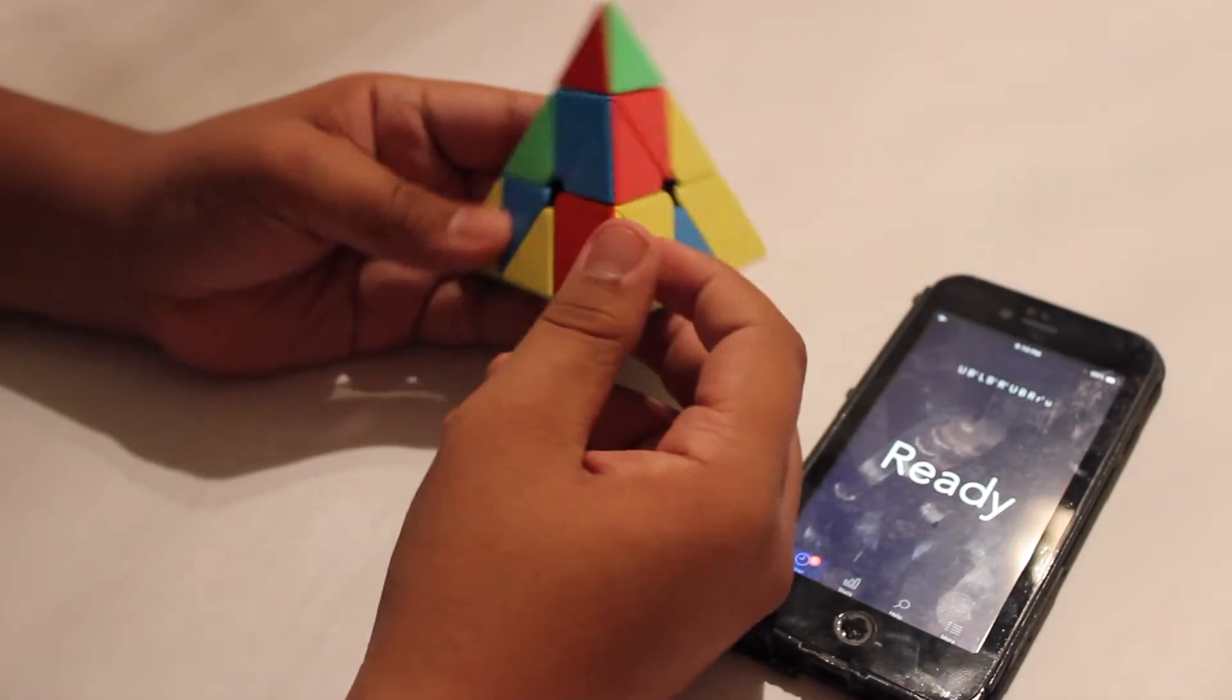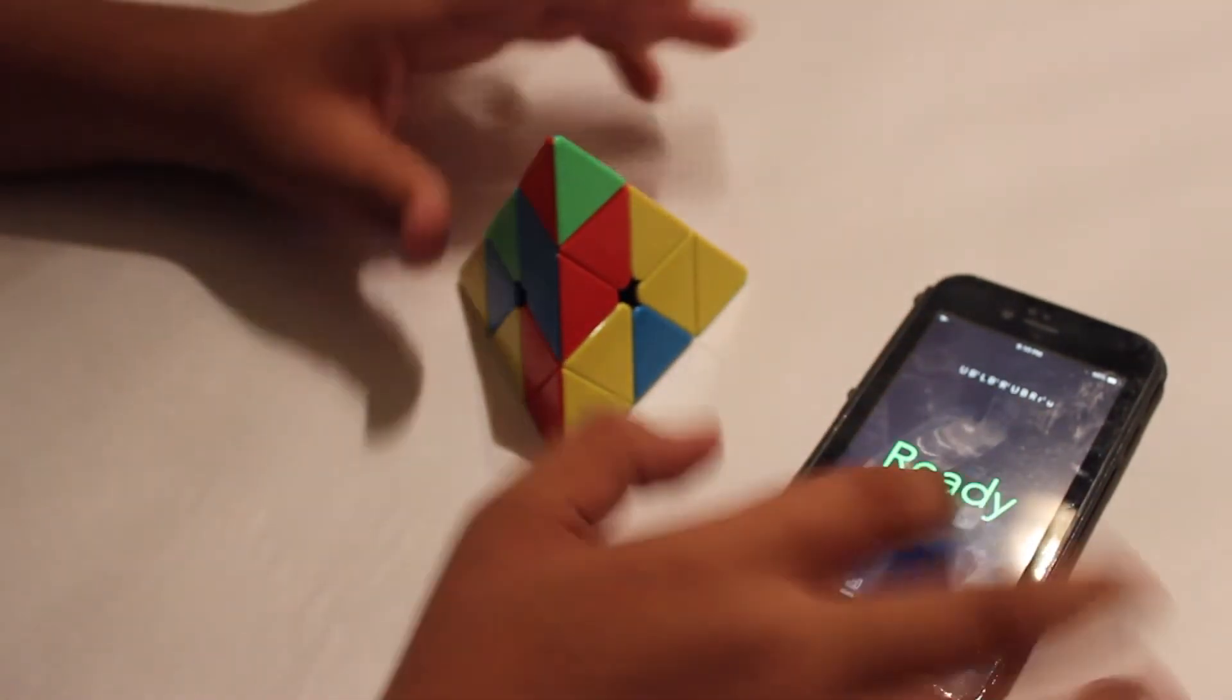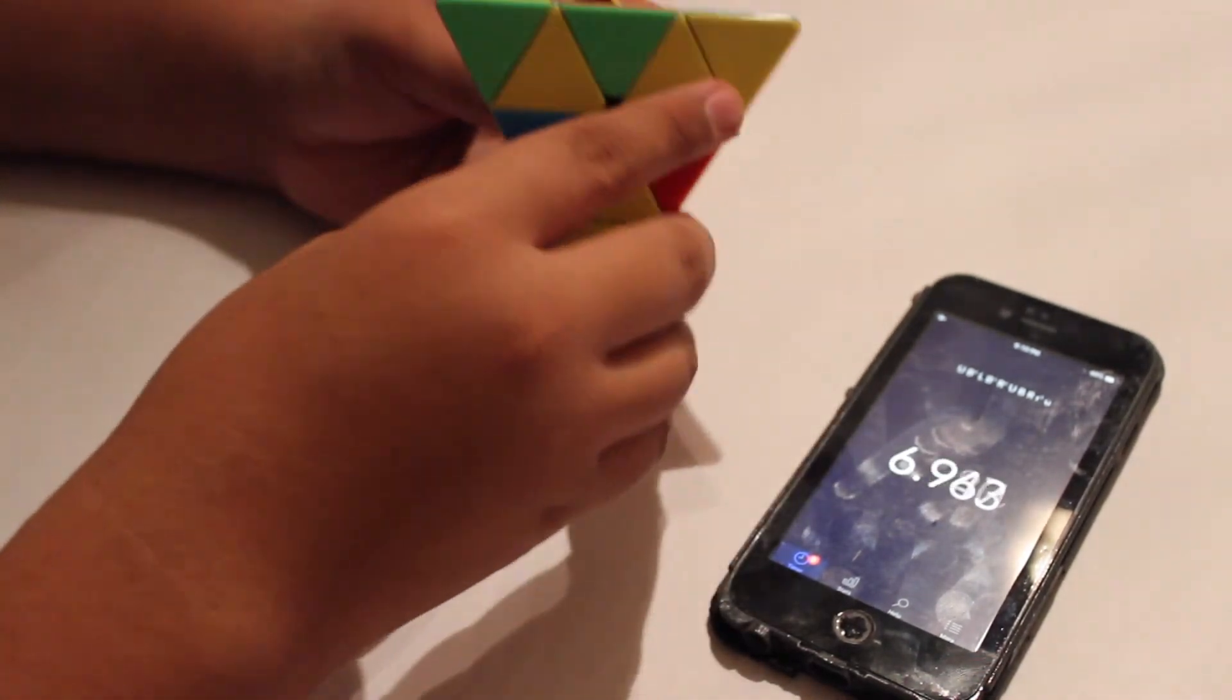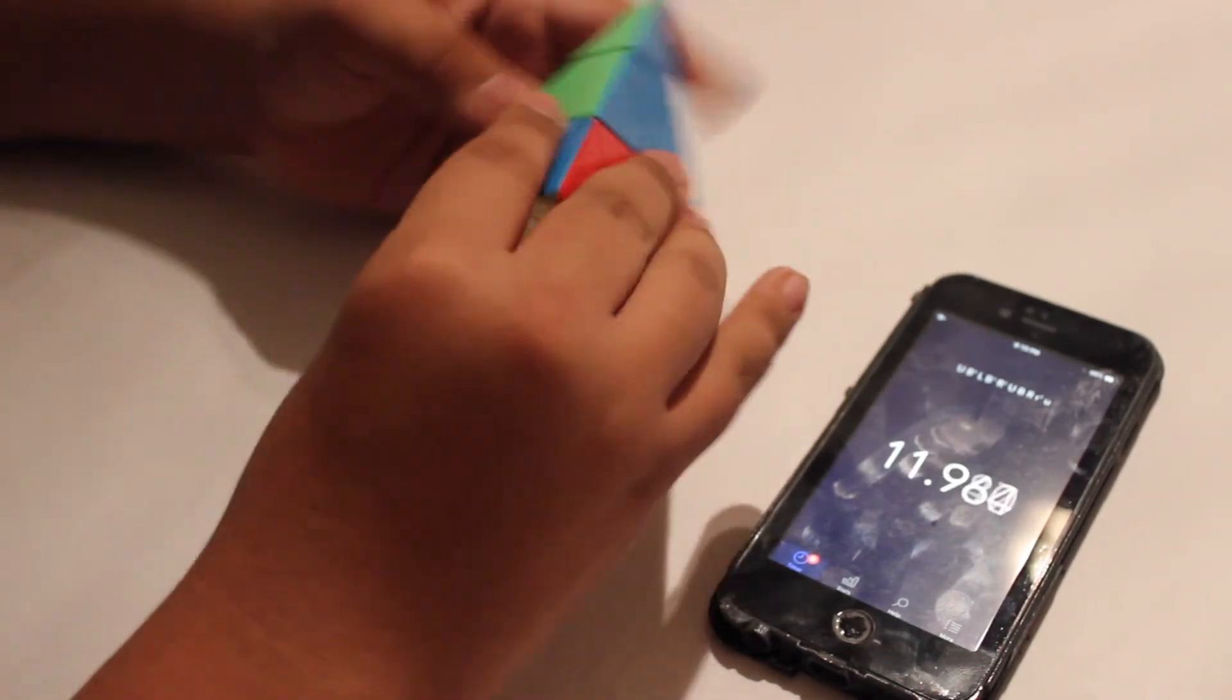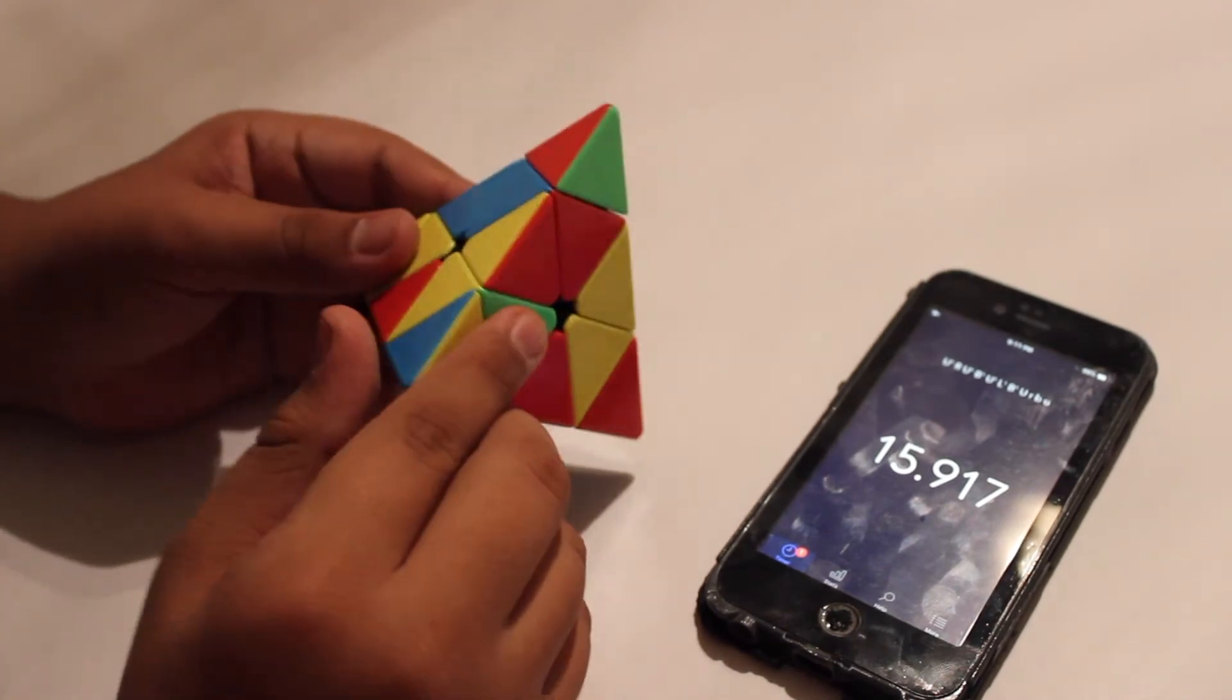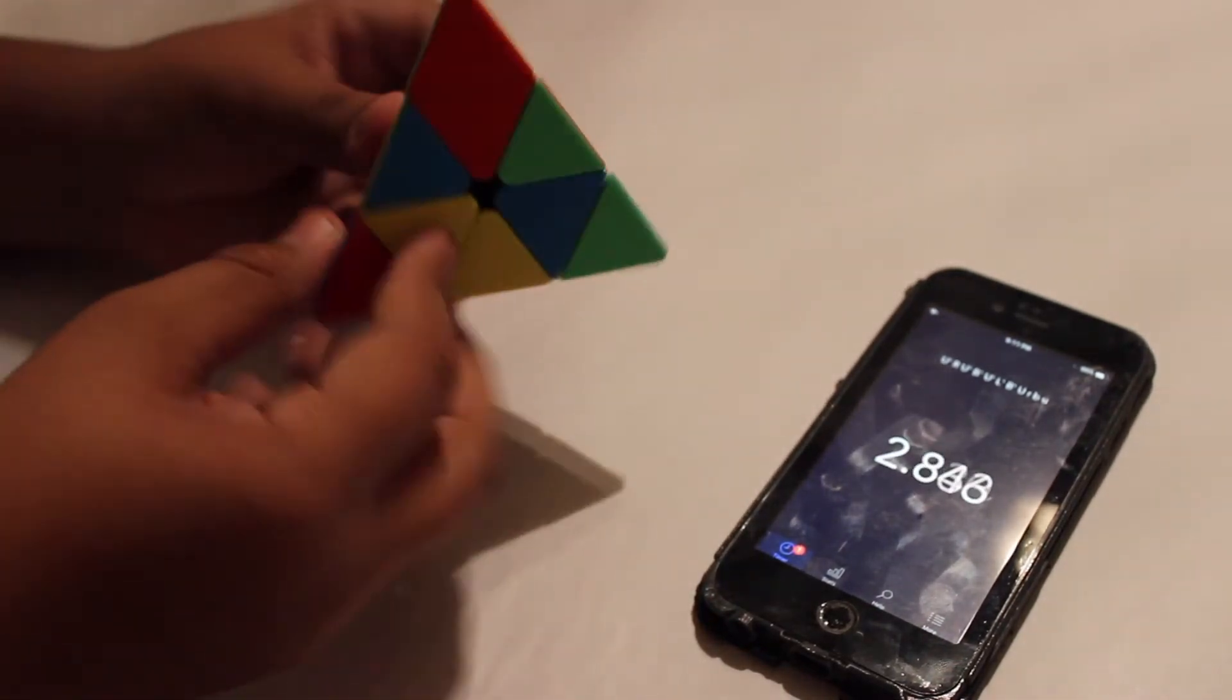So what you're seeing now is me doing a solves average of three. What I'm going to say now is information on the cube. So on thecubicle.us, you can get the Shang Shao Pyraminx for roughly $9 or exactly $8.99. It weighs 85.3 grams. And it's only available in stickerless bright colors.